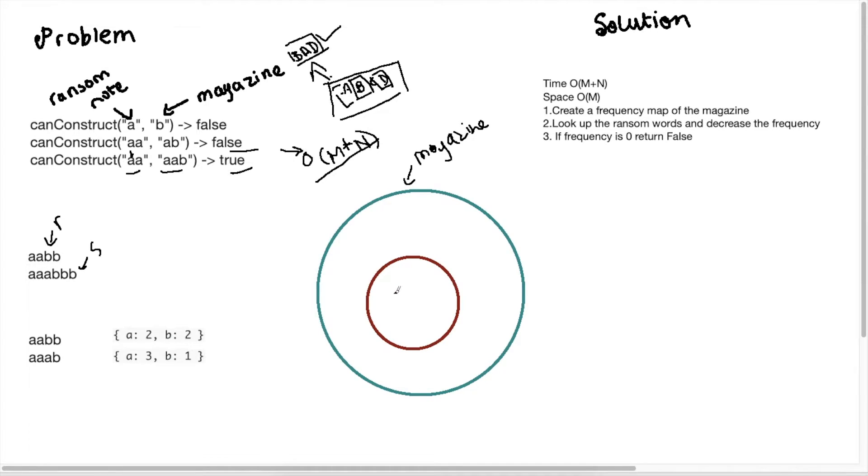So our ransom note we need to have a a b b and we also have these characters in our string but we also have an extra a and b. So looking at this we can tell that the problem is asking us if we find a subset within the magazine yes we will be able to solve this problem and return true.